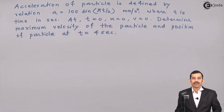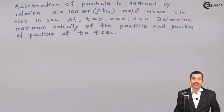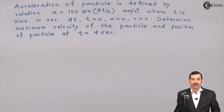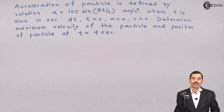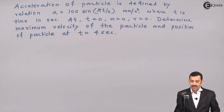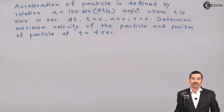To solve this problem on variable acceleration, the acceleration of a particle is defined by the relation a = 100 sin(πt/2) millimeters per second squared. The units of velocity will be millimeters per second and position in millimeters, where t is time in seconds. At t = 0, x = 0 and v = 0, meaning the particle starts from the origin at rest. We need to determine the maximum velocity and position at t = 4 seconds.